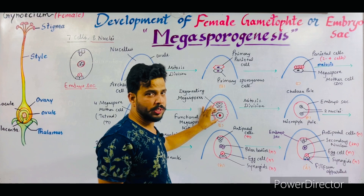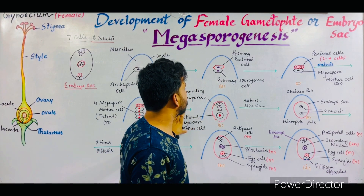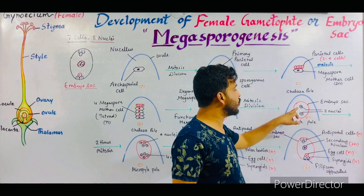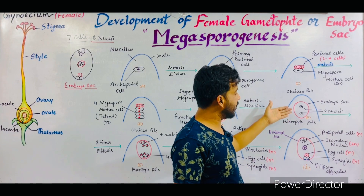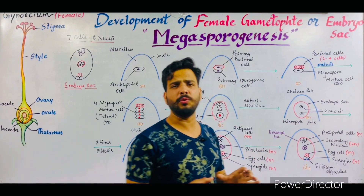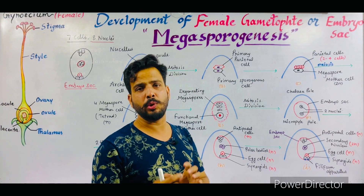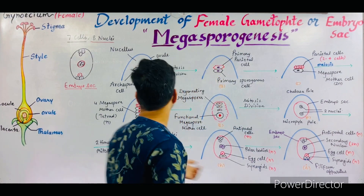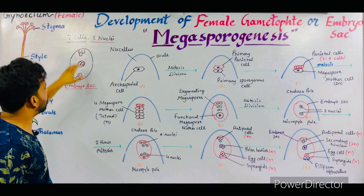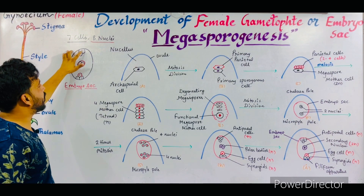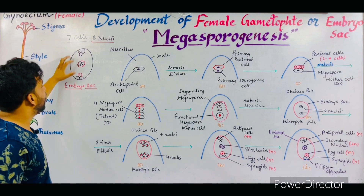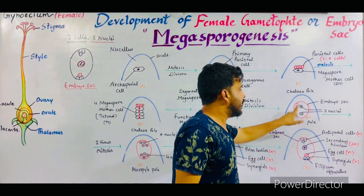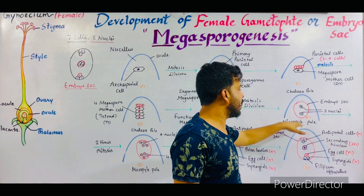What is the procedure? This functional megaspore divides again by mitosis division to form two cells, in which one cell moves towards the upper end or the chalaza pole while another moves towards the micropyle pole. These are the two poles of the ovule, as I described in my last video. One is the micropyle pole and another is the chalaza pole. At the chalaza pole antipodal cells are present, and at the micropyle pole there are two synergids and one egg cell.